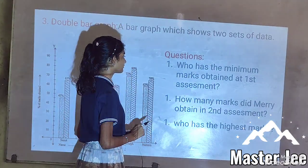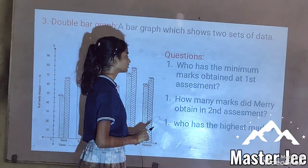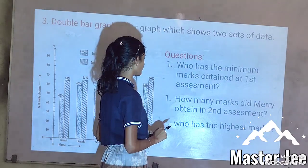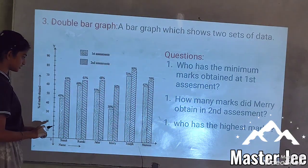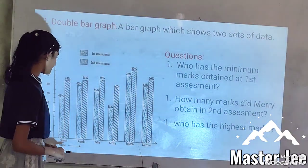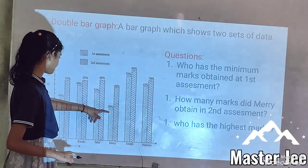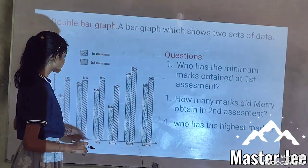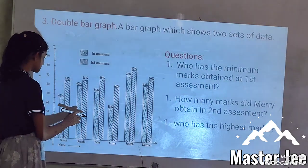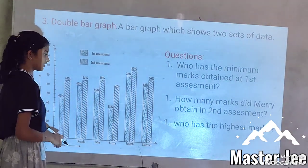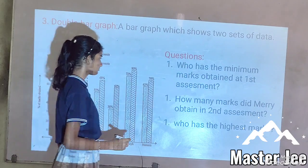Question number one: Who has the minimum marks obtained in the first assessment? In the first assessment, Mary has the minimum marks obtained as it is lower than the others.